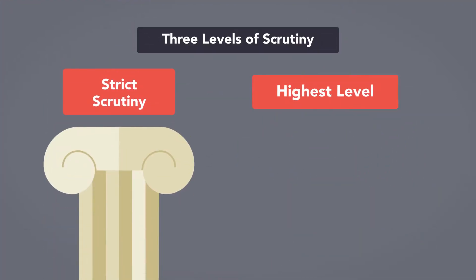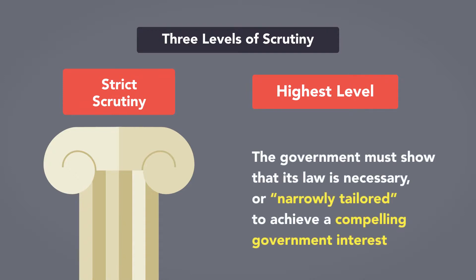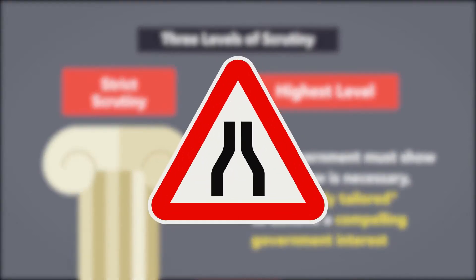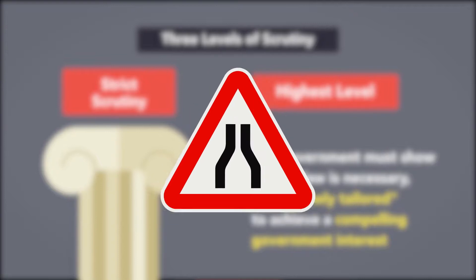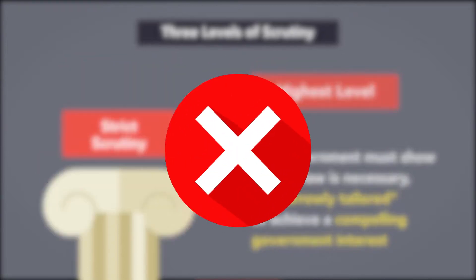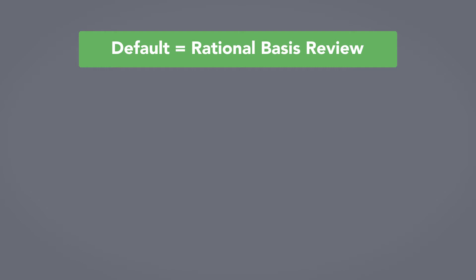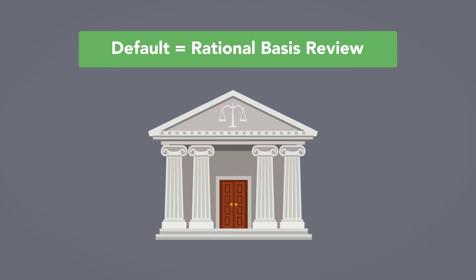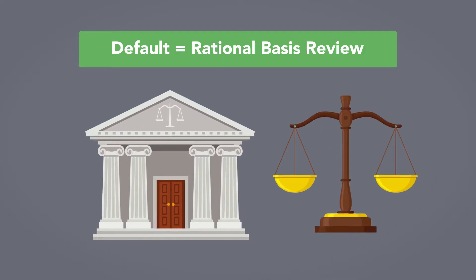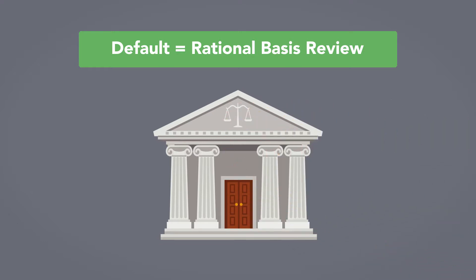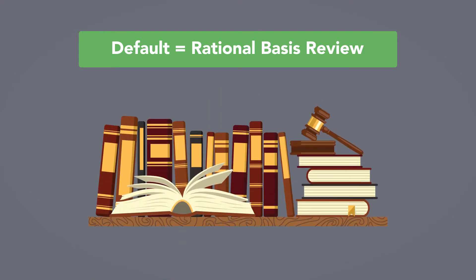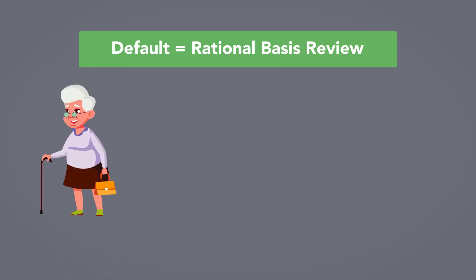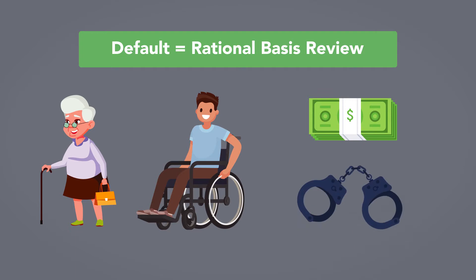Strict scrutiny is the highest level of scrutiny. To pass strict scrutiny, the government must show that its law is necessary or narrowly tailored to achieve a compelling government interest — meaning not only must the law secure a very important interest, it must also be the least restrictive way of doing so. Strict scrutiny is usually a death knell for a state or federal regulation. The default position is that a regulation will be subjected only to rational basis review unless the Supreme Court determines the type of rule deserves higher scrutiny. Most governmental regulations, including almost all economic regulations, are subjected only to rational basis review. Categories also subject only to rational basis include laws based on age, disability, financial status or wealth, and criminal history.